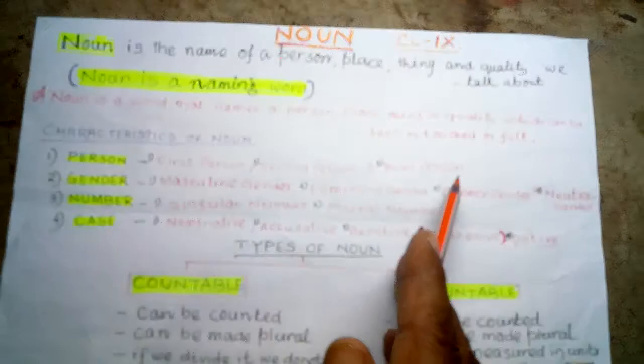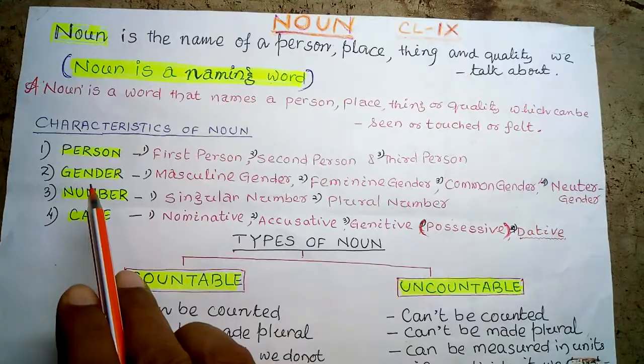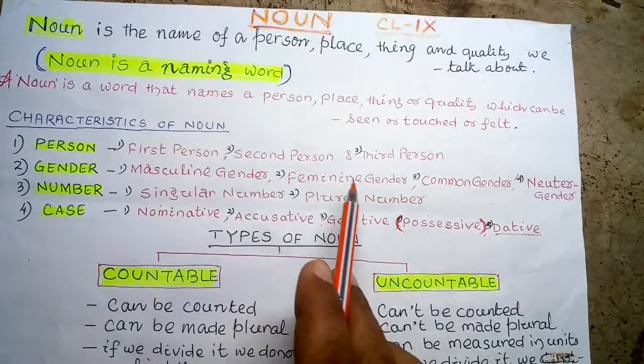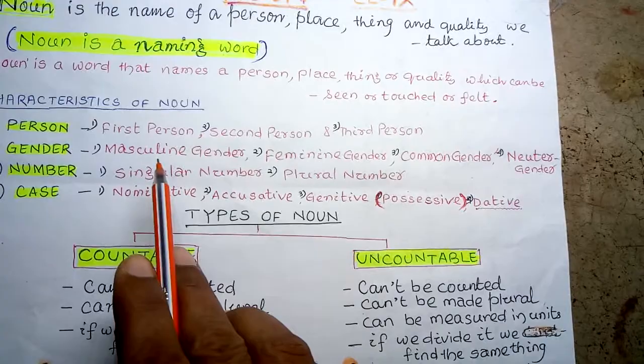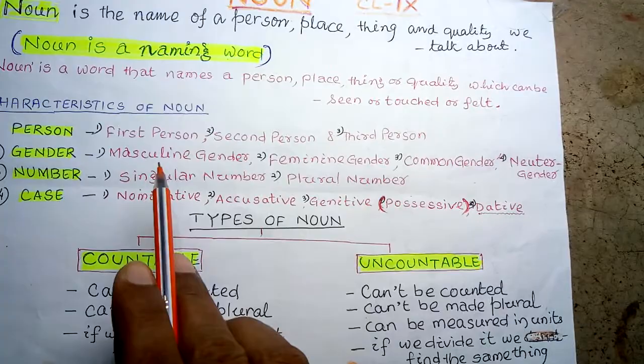The second characteristic is gender. Gender is of four types: masculine gender, feminine gender, common gender, and neuter gender. Masculine gender refers to male — for example, boy, man.